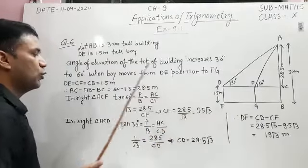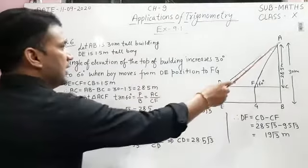On rationalizing we get the value of CF, that is 9.5 root 3. Again, in right triangle ACD,